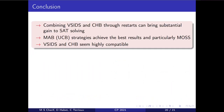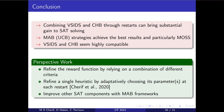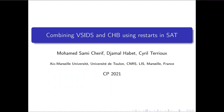To conclude, we showed that VSIDS and CHB are highly compatible and that their combination through restarts can bring substantial gains to SAT solving. We also showed that upper confidence bound strategies achieved the best results, particularly MOSS, which achieved remarkable results in terms of solved instances and solving time. As future work, it would be interesting to refine the reward function using a combination of criteria, to study adaptive parameter selection for a single heuristic at each restart, and to improve other SAT solver components with MAB frameworks. Thank you for your attention.